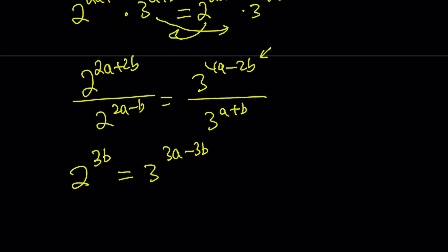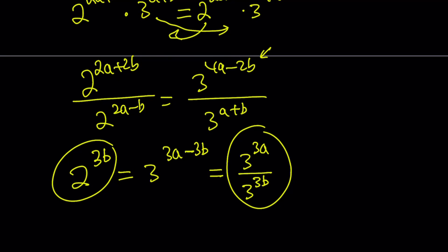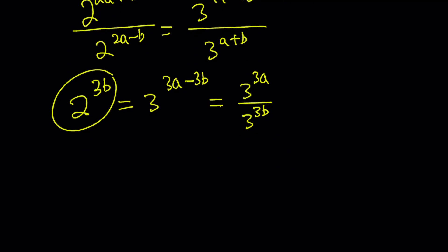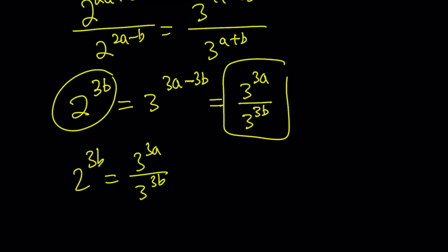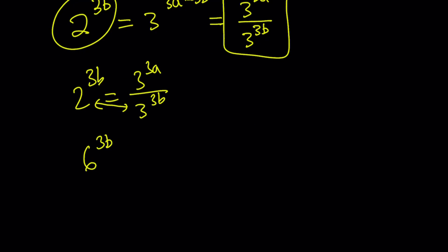From here, we can write the right side as a quotient since the exponents are being subtracted: 3 to the power 3a divided by 3 to the power 3b. This equals the left side. By cross-multiplication, that gives us 6 to the power 3b, because they have the same exponents — we can multiply the bases. The rule is: a to the power x times b to the power x equals (a times b) to the power x. So that equals 3 to the power 3a.